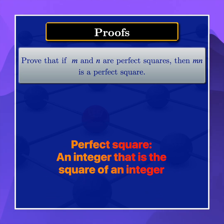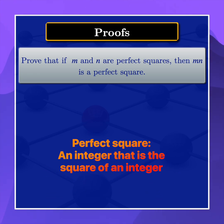By definition, a perfect square is an integer that is the square of another integer. So in this case we are looking at these integers and we are saying they are perfect squares.